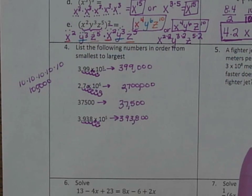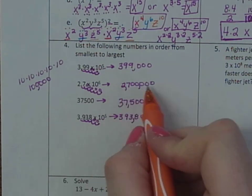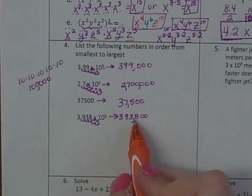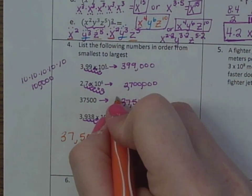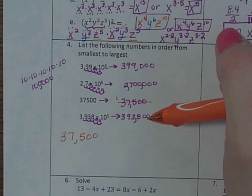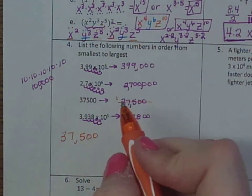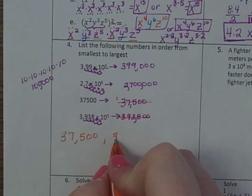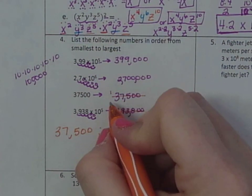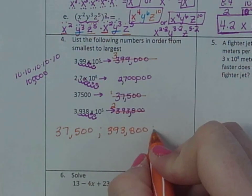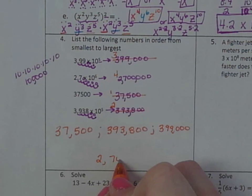Okay, now we want to order them from smallest to largest. So I'm going to look for the smallest number. This is 399,000. This is 2,000,000. This is 37,500. This is 393,800. So this one is 1st. 37,500. That one's 1st. Then I need to look between these two. Which one is smaller? Would you rather have 399,000 or 393,800? So this one is smaller. So 393,800. I'm going to put a semicolon so you can tell the difference.